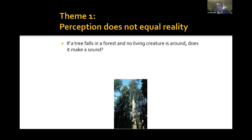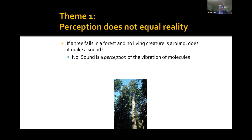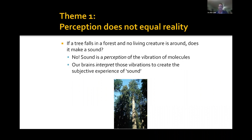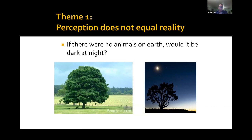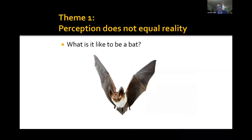Here's a classic philosophical question: if a tree falls in a forest and no living creature is around, does it make a sound? Interestingly, the answer is no — sound is a perception, and if there's no living being to take those vibrations of molecules and interpret them as sound, there is no sound. Similarly, if there are no animals on earth, would it be dark at night? Our perception of light and dark is our brain's way of interpreting different wavelengths. We've evolved to process information to allow us to survive, not necessarily to interpret the world accurately.